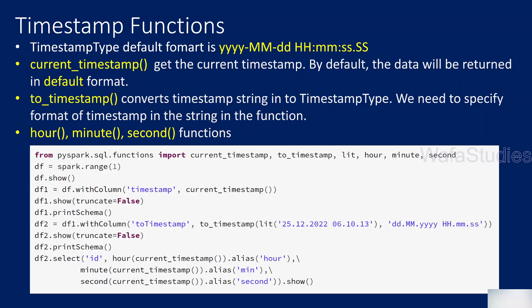In PySpark, we have something called timestamp type. The default format of that type is yyyy (year), then hyphen, then mm (month), then hyphen, then dd (date), then space, then hh for hours, small mm for minutes, then seconds and milliseconds. So this is the default format of timestamp in PySpark.